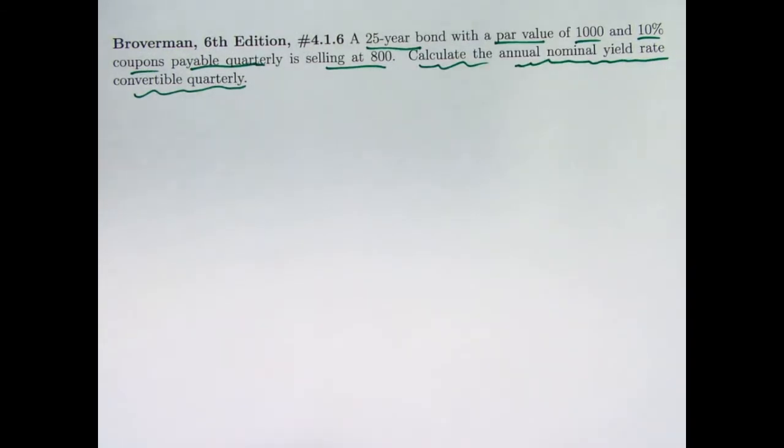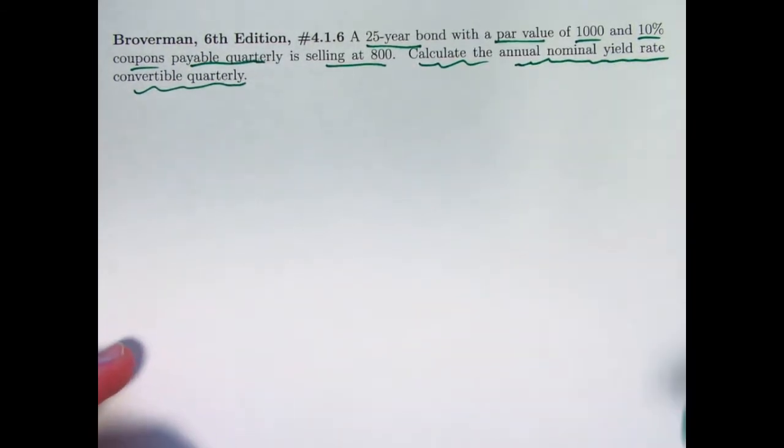The effective quarterly rate would be one-fourth of the answer, so if we can find the quarterly rate, we need to multiply it by 4.